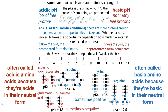In their neutral form, aspartic acid and glutamic acid act as acids. They give up a proton, they become negatively charged, so we often see them in their negatively charged states, in which case they would actually be able to act as a base.